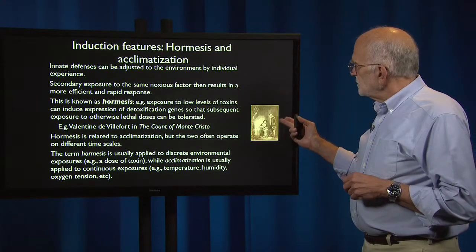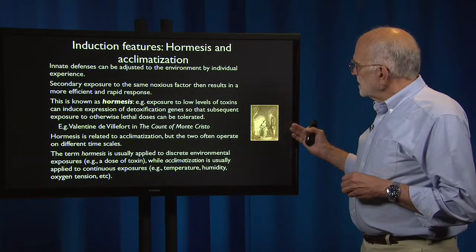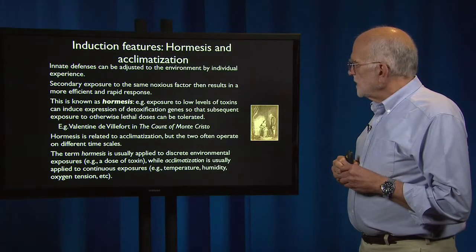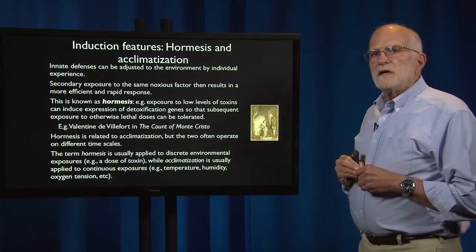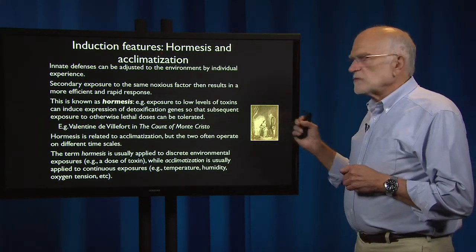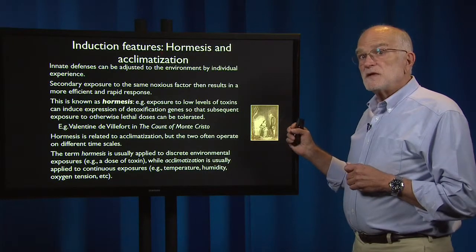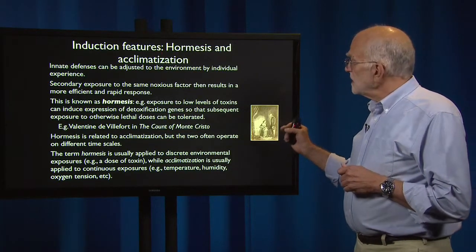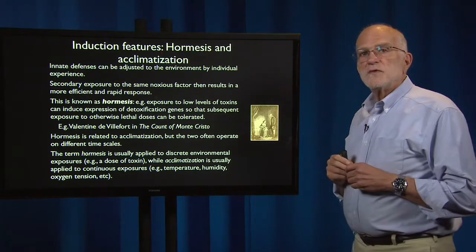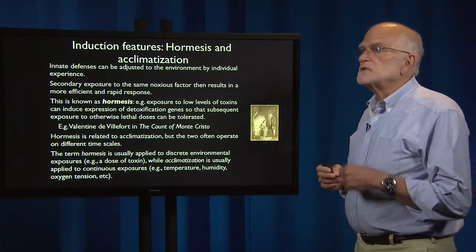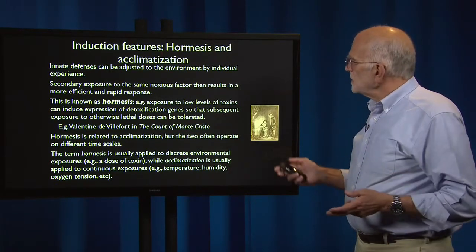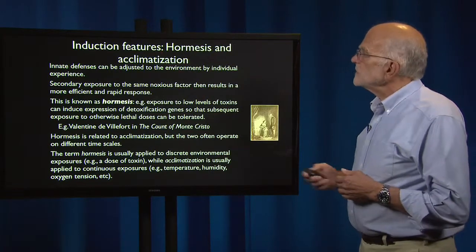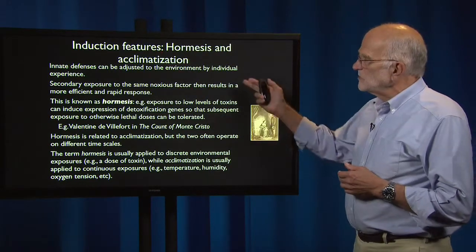Here is a figure of Dumont talking to Valentin. He gave her small doses of the poison, anticipating that she would be the object of a poisoning attempt. And when she was actually poisoned in the novel, she went into a coma and recovered. So that's an example of hormesis.